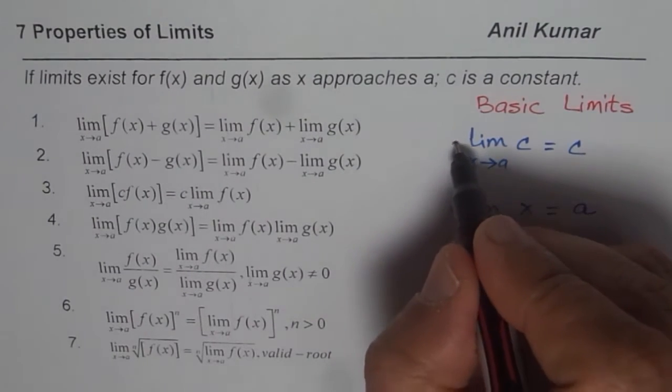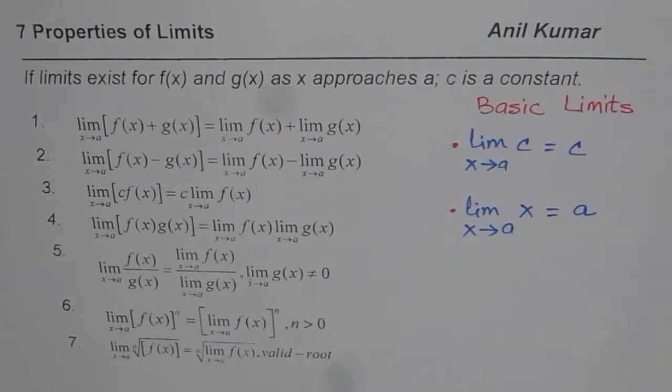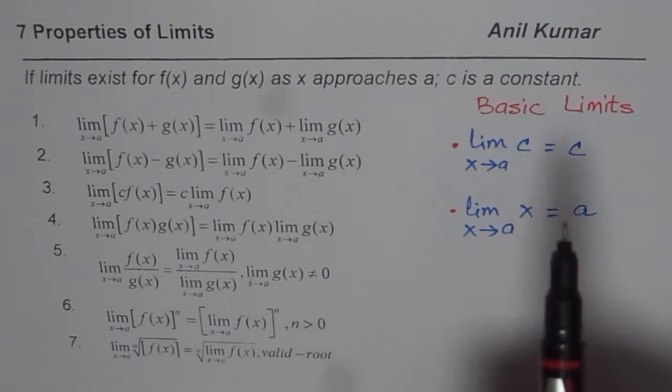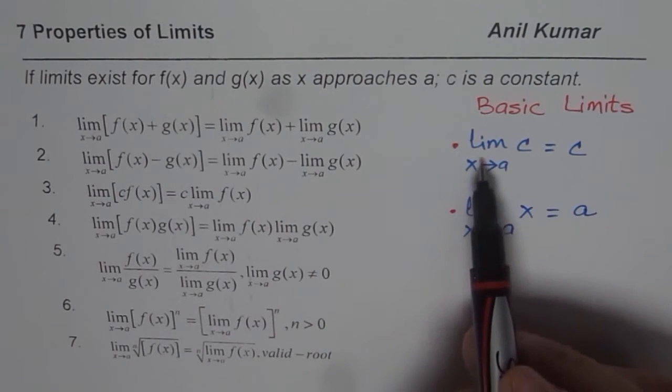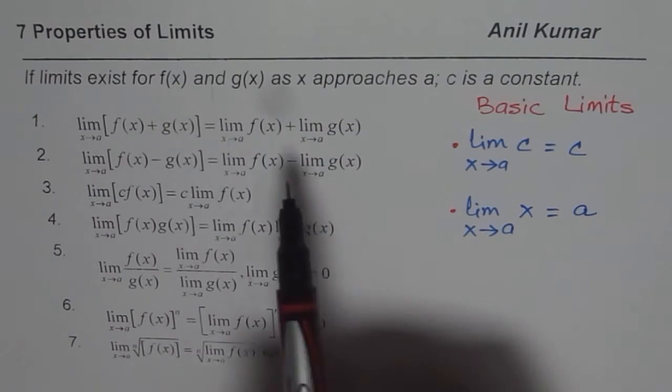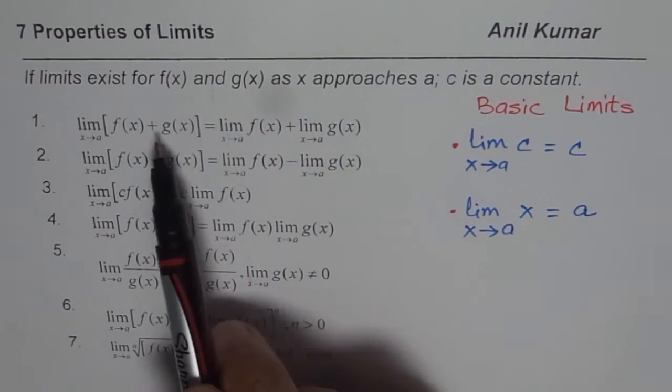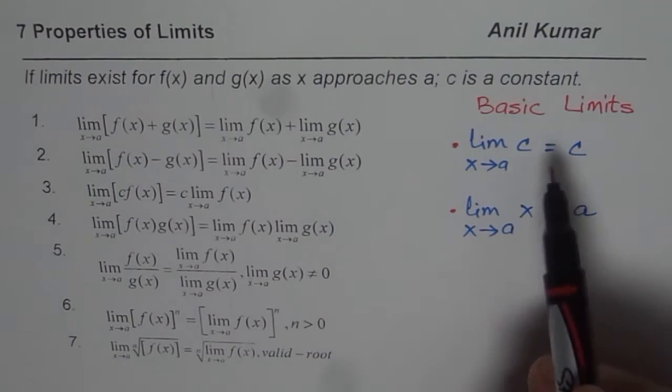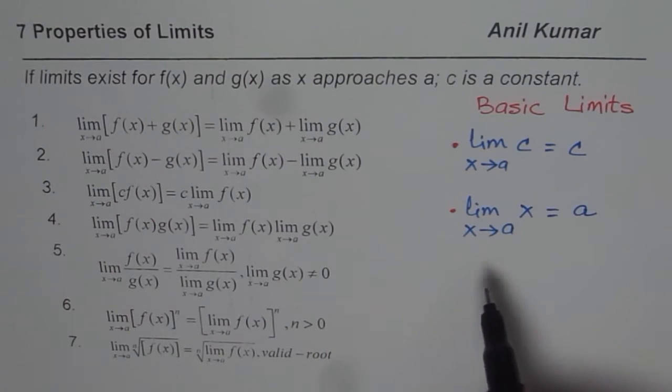In some books, when we talk about properties of limits, they treat basic limits as property number one and two. To make them seven, they combine properties, saying plus and minus together, but they get the same number as seven. So in books you will find basic limits as properties. Anyway, nothing is wrong here.